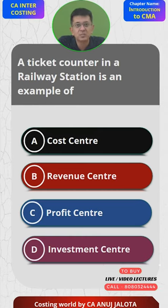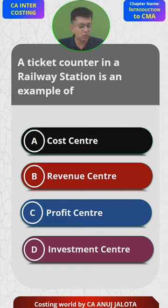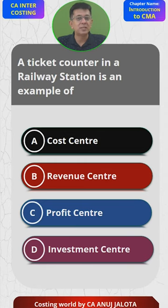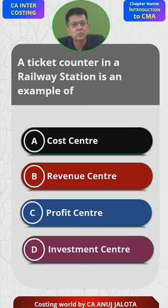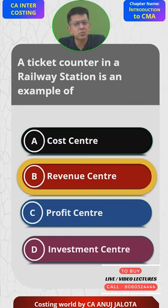The importance of this is: whenever you are trying to judge the performance of a ticket counter, you should always think about what the revenues should have been and what they actually were. Therefore, the answer in this case is B — revenue center. That's the correct answer. I'll see you all next time in another MCQ. Bye!